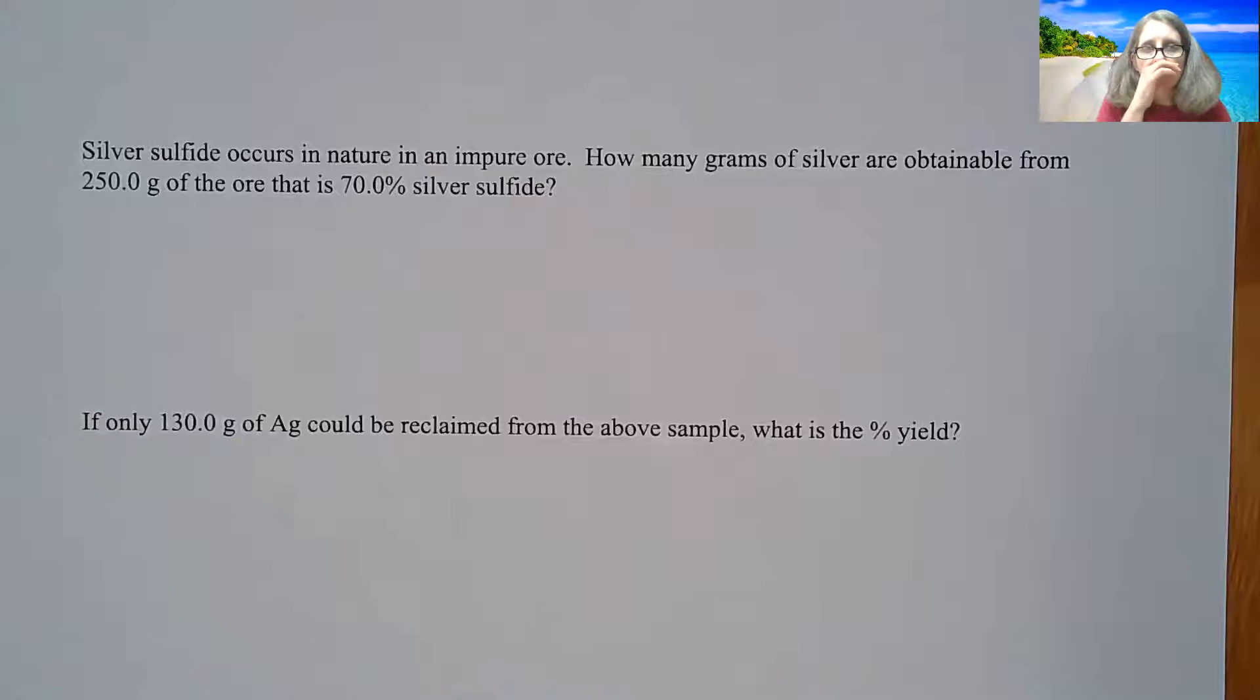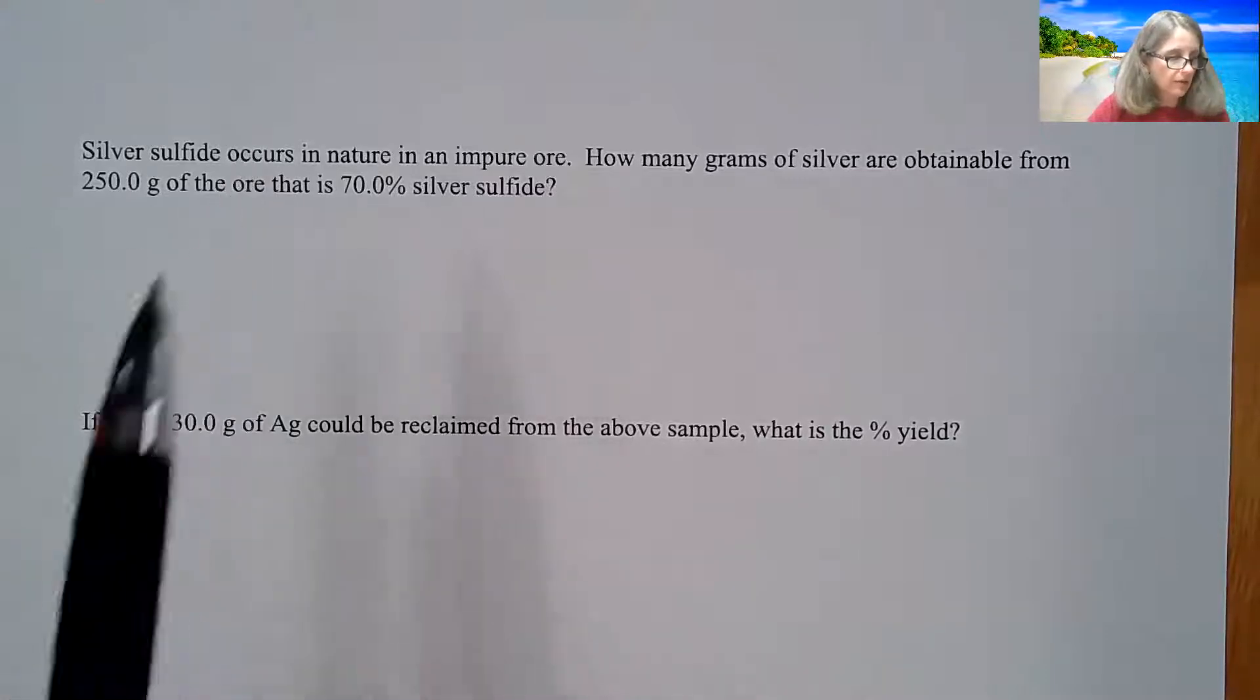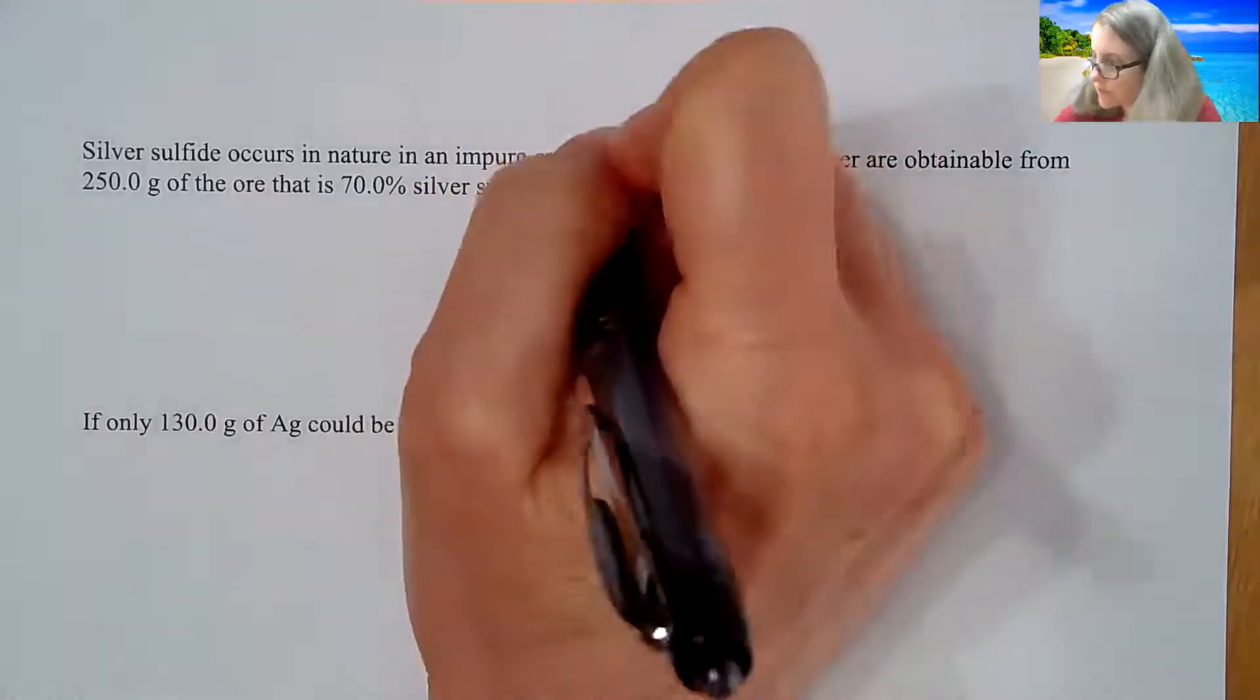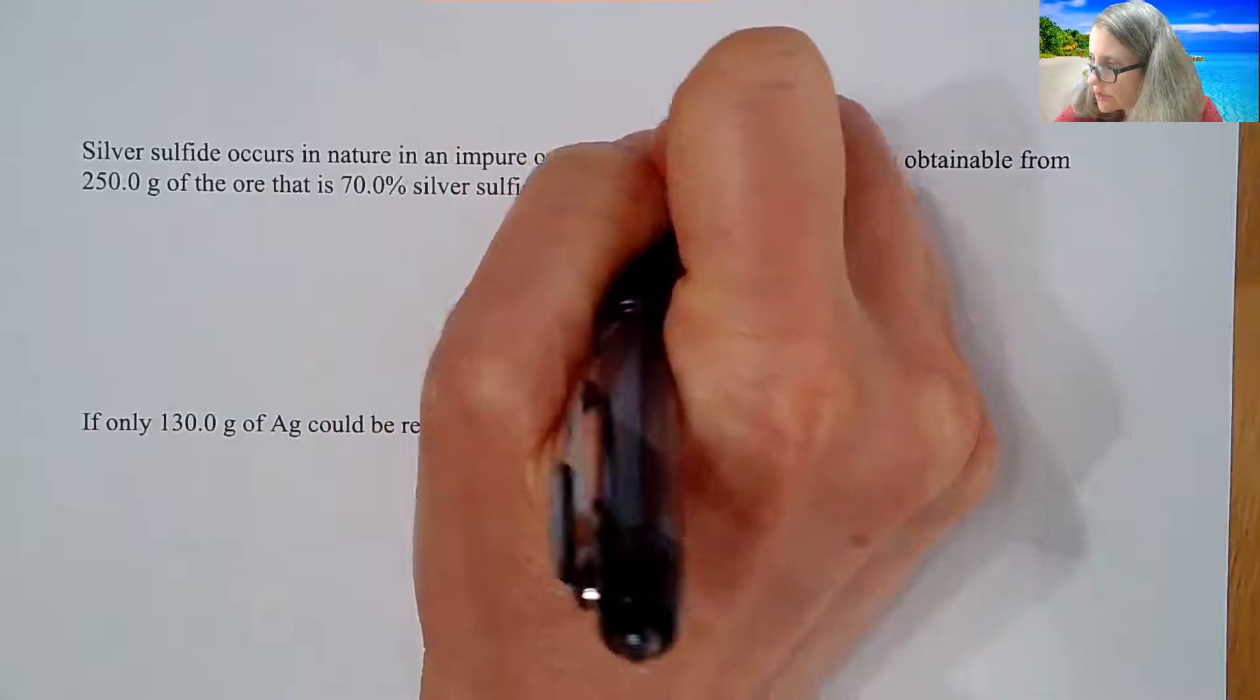First problem I want to talk about is this one, introducing something called percent yield. So we have something called silver sulfide, AG2S.